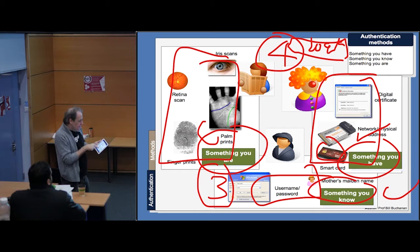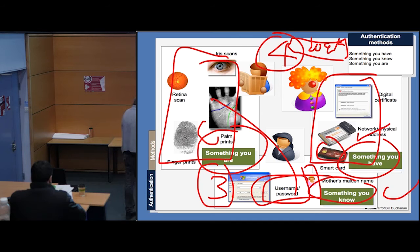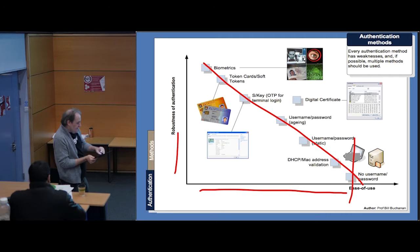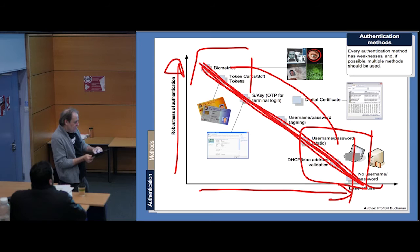In a highly secure system we don't ask knowledge-based questions three times — username and password, mother's maiden name, date of birth. That's knowledge, knowledge, knowledge, and it's easy to find that on the internet. In multi-factor authentication we bring together something you know with something you are — a fingerprint scan and a PIN code is a good way of doing it. Authentication methods are normally defined by how good they are versus how easy they are to use — usernames and passwords are easy to implement, but biometrics and tokens are more difficult yet give us much more robustness.